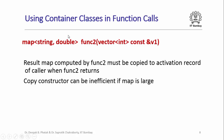What happens if a function tries to return a container object? For example, the function func2 is trying to return a map with key type string and value type double. func2 must compute a certain map, and when it tries to return that map, the map is going to be copied to the activation record of the caller function when func2 returns. This copying is done by invoking the copy constructor of the map class instantiated with string and double, which copies every key-value pair — and this can be very inefficient if the map is large.